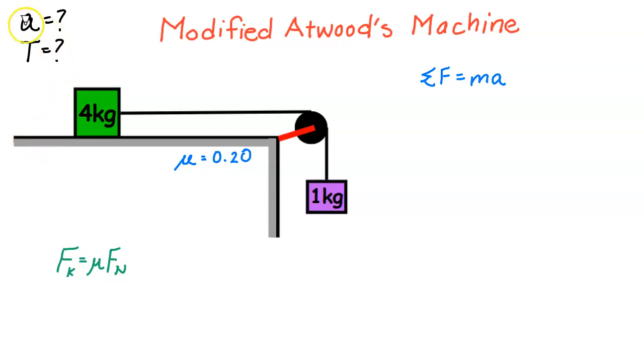In this video, we're going to solve for the acceleration and tension for this modified Atwood's machine. So in a modified Atwood's machine, you have a pulley, you have a block that's on the table connected through a string, and on the other end of the string is another body, another object.